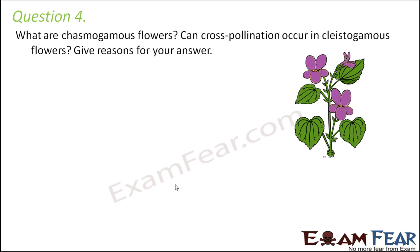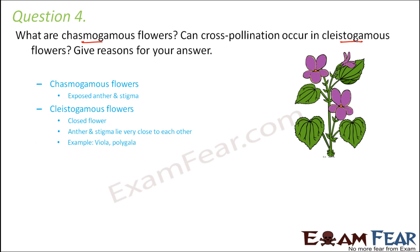Question number 4: What are chasmogamous flowers? Can cross-pollination occur in cleistogamous flowers? Chasmogamous flowers are those which have exposed anthers and stigma — the flower is wide open, so both anthers and stigma are exposed. Cleistogamous flowers are closed flowers. When closed, the anthers and stigma lie very close to each other. Examples of such plants are Viola and Polygala. In open flowers, anthers and stigma are farther apart but both exposed.